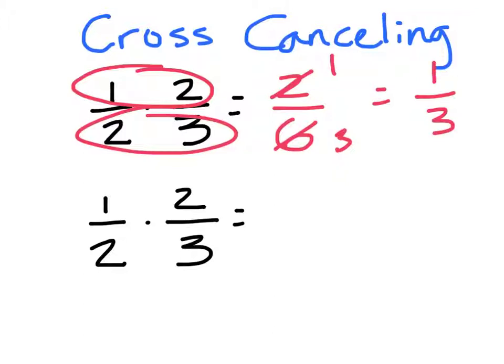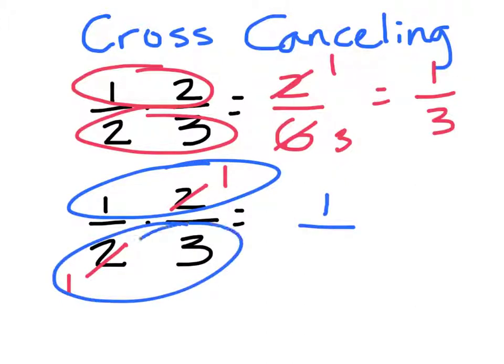The idea of cross-canceling is before I multiply, if I find common factors, I can cancel those diagonally. For example here, I see a 2 here and a 2 here, so I can cancel that before I multiply and make it 1 over 1. And then I will multiply the tops together and the bottoms together and get 1 third. The idea of cross-canceling is really important as we're looking at unit conversions.